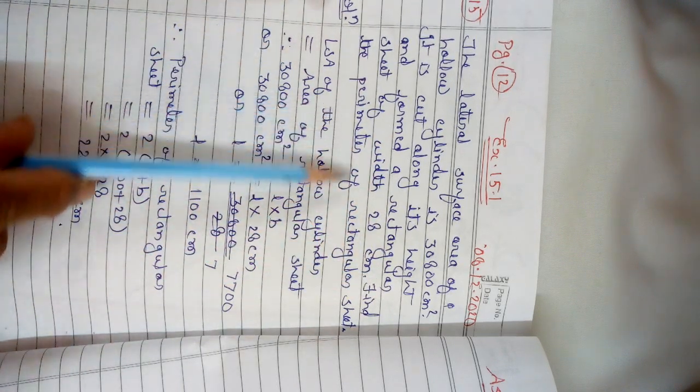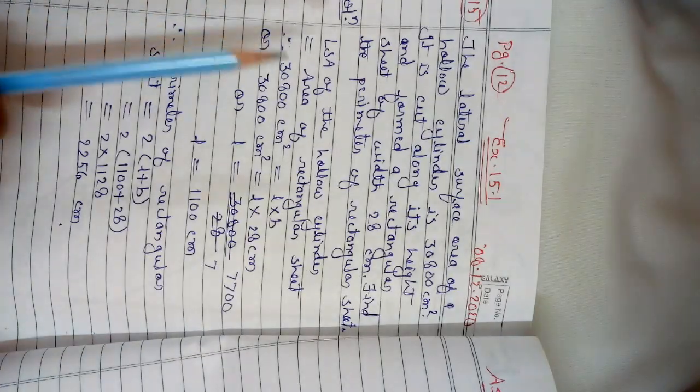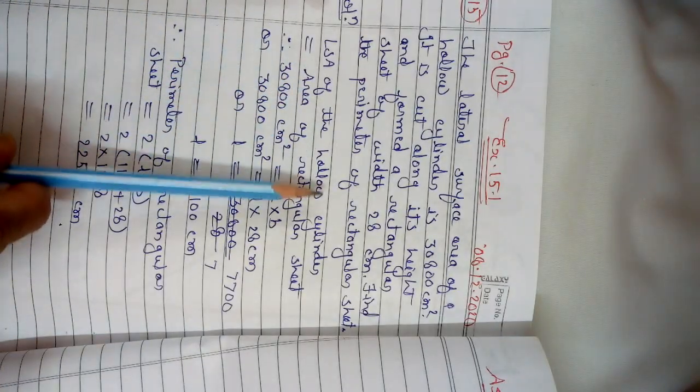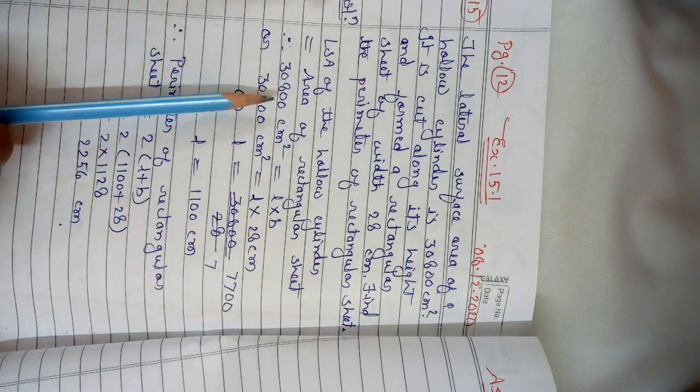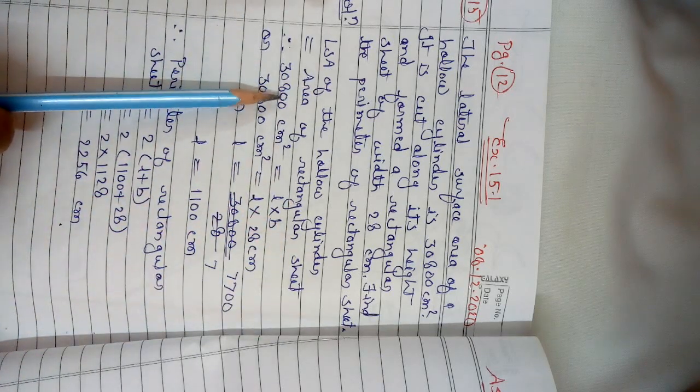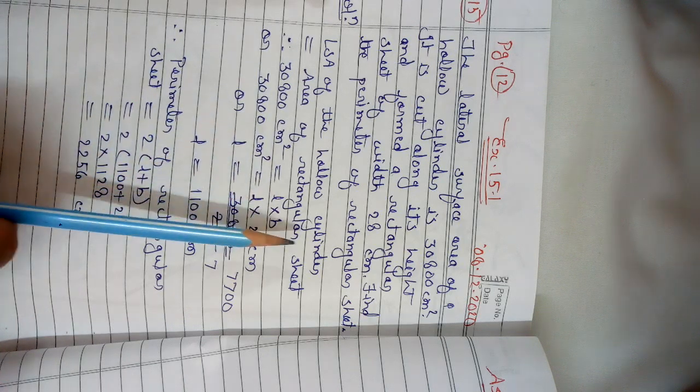The lateral surface area of the hollow cylinder will be equal to the area of the rectangular sheet. So 30,800 square cm = L × B, which is the area of the rectangular sheet.